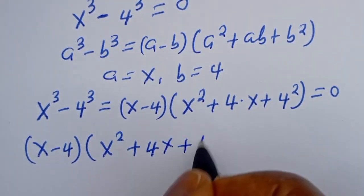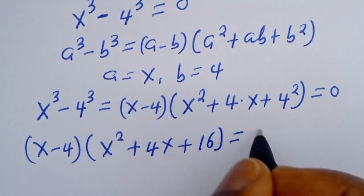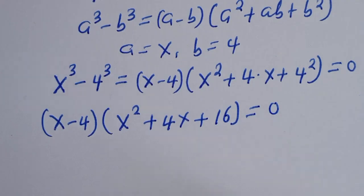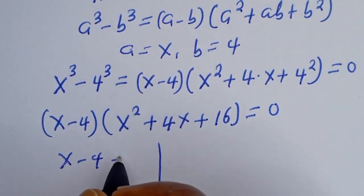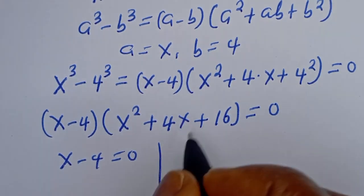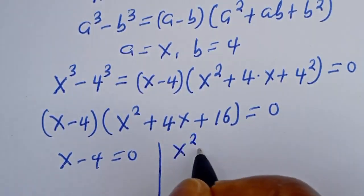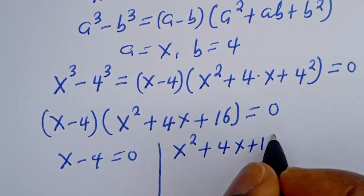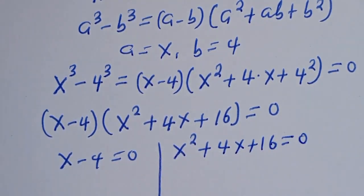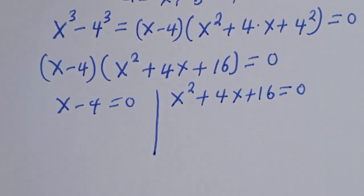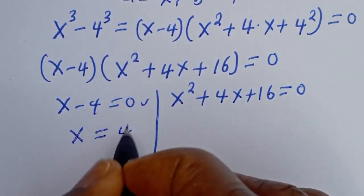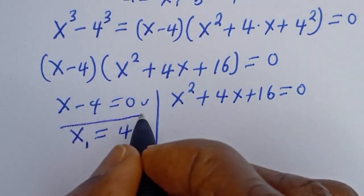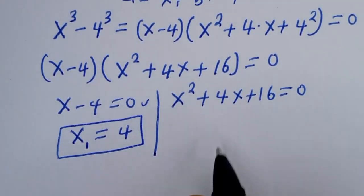So this is (s − 4)(s² + 4s + 16) is equal to zero. Now there are two cases. The first case is s minus 4 equal to zero, and the second case is s² + 4s + 16 is equal to zero. From the first case, s is equal to 4 — let's call this s₁.